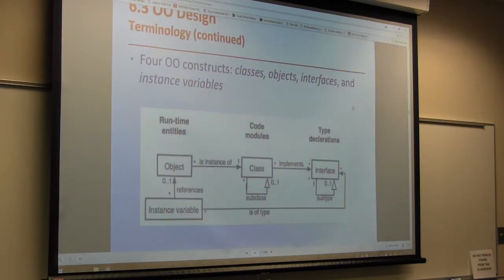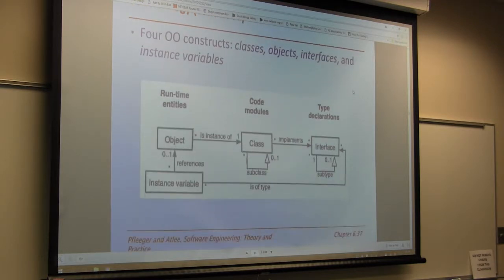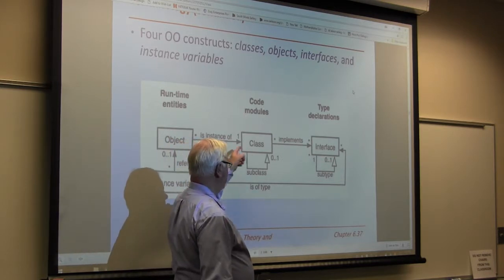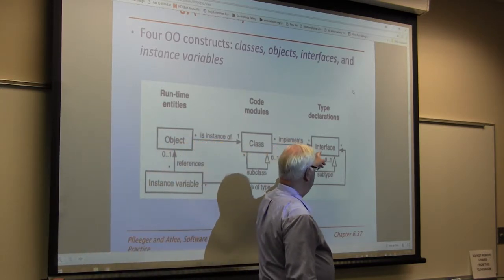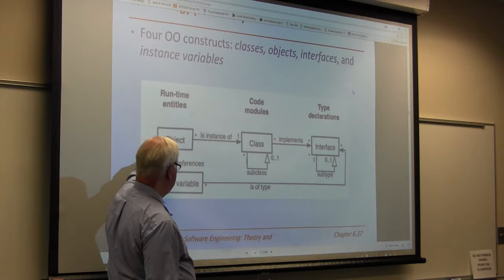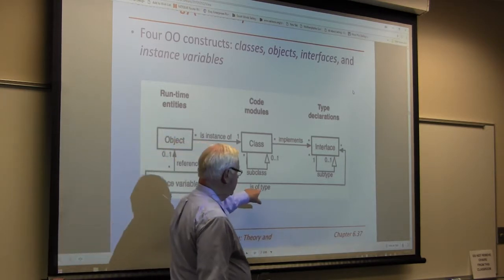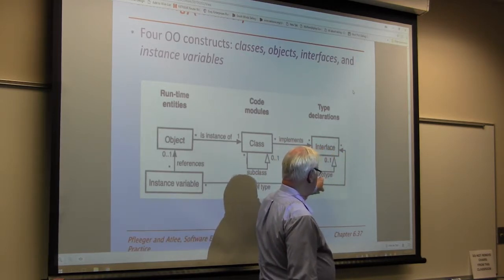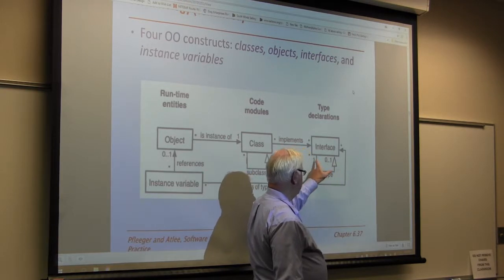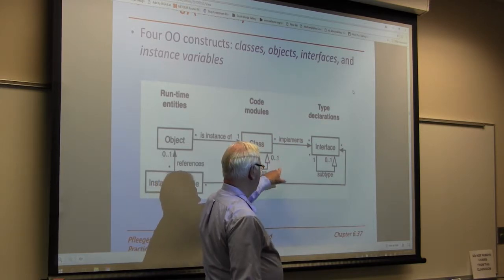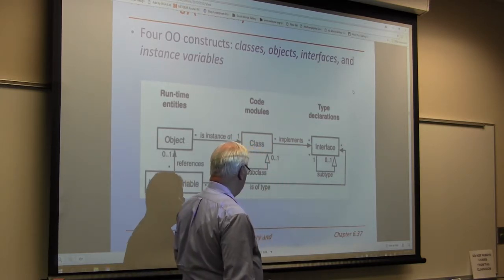Here's a diagram. We have a runtime entity — the object — which is an instance of a class. It implements an interface and has instance variables with references to the object. Below the interface we have subtypes: zero to one, meaning either none or one. Subclasses of the class are also zero to one — either no subclass or one subclass.